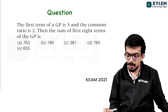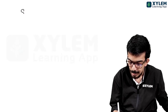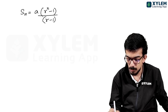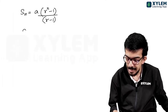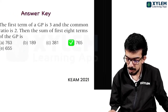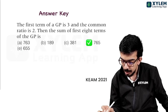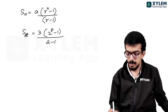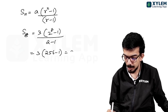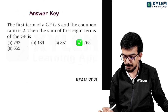The first term of the GP is 3 and common ratio is 2. The sum of the first 8 terms of the GP is: S8 = a times (r^8 minus 1) divided by (r minus 1). So S8 = 3 times (2^8 minus 1) divided by (2 minus 1), which simplifies to 3 into 255, giving 765 as the right answer.